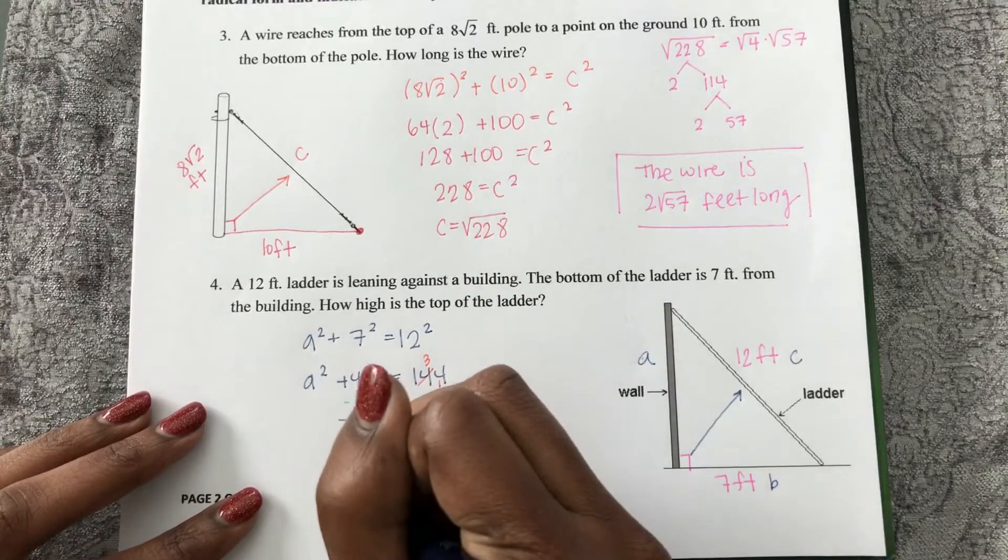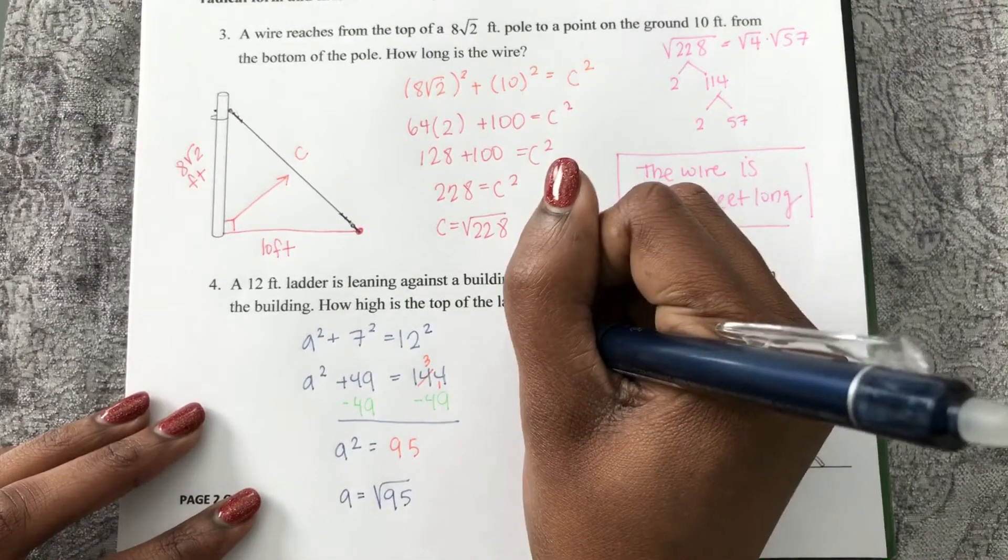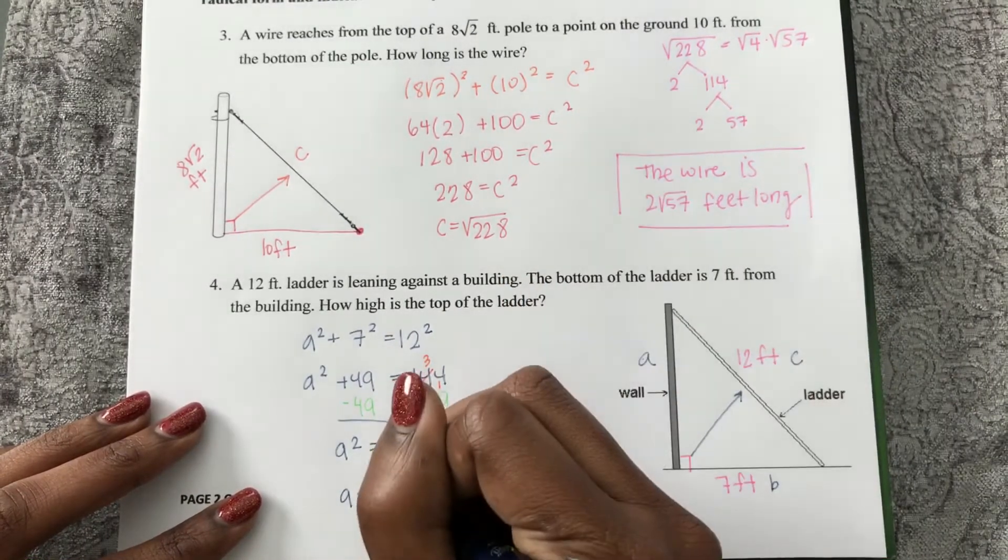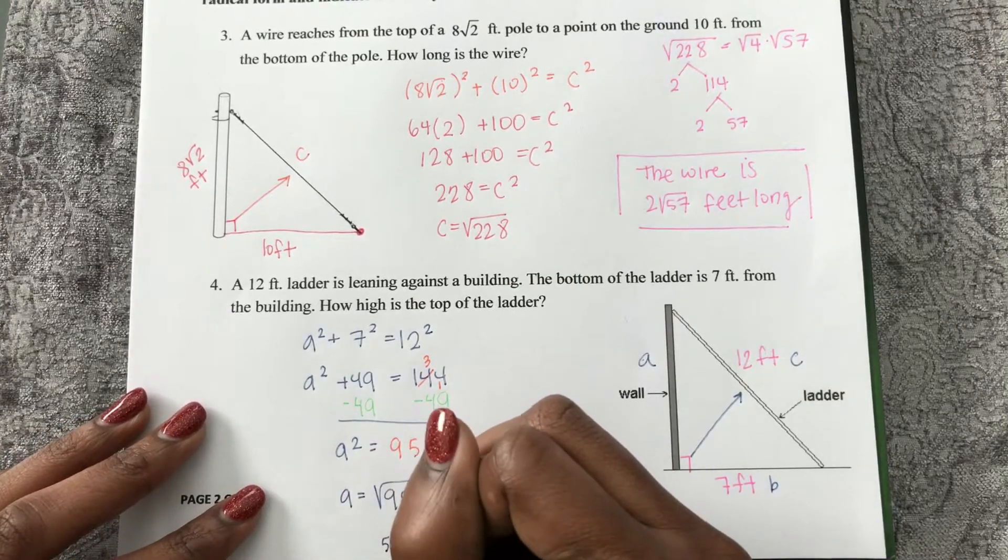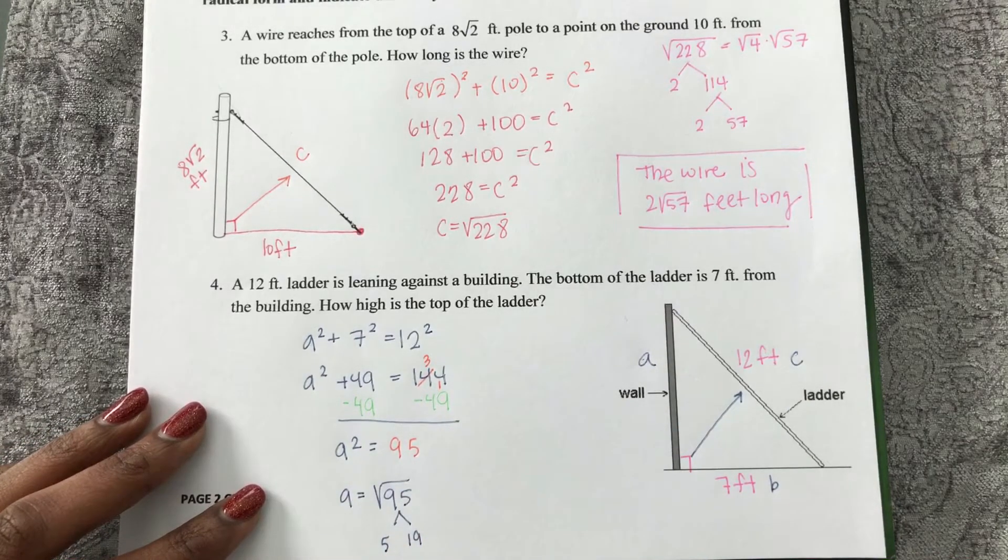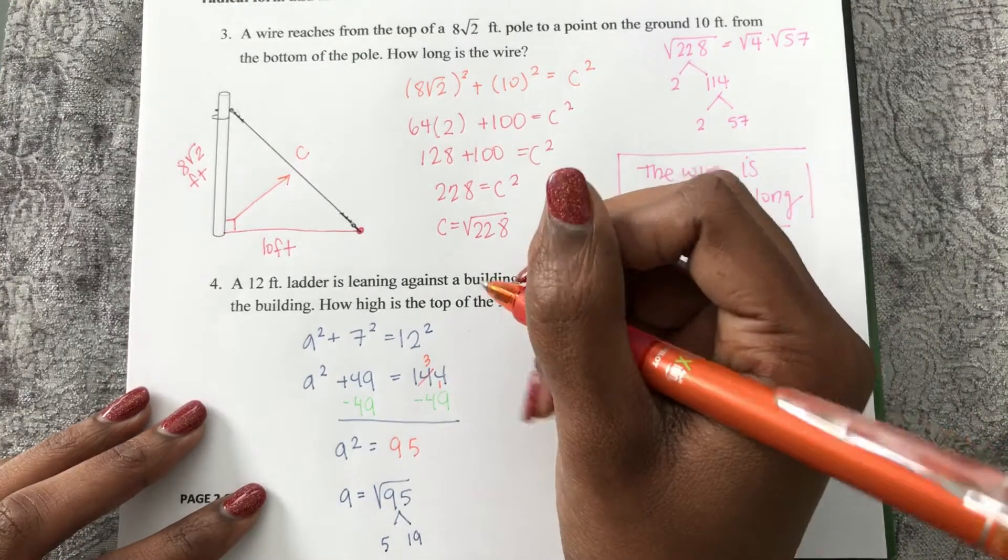So A is the square root of 95. So if I try to simplify square root of 95, that's just 5 multiplied by 19. Neither one of those are perfect squares. So I can summarize by saying,